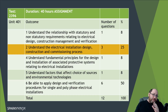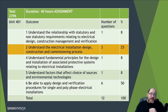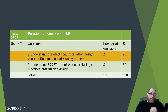Outcome 2 is bigger — quite a bit bigger. It covers understanding the electrical installation's design, construction, and commissioning process. It's approached in both assessments — the assignment and the written.